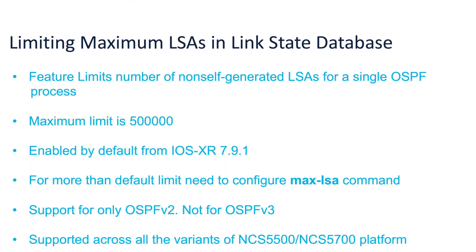The second feature is around limiting the LSAs in a link state database. This feature allows you to protect the OSPF routing process by limiting the number of non-self-generated LSAs for a given OSPF process. When other routers in the network have been misconfigured, they may generate a high volume of LSAs. This mechanism prevents routers from receiving a large number of LSAs, thereby preventing CPU failure and memory shortages.